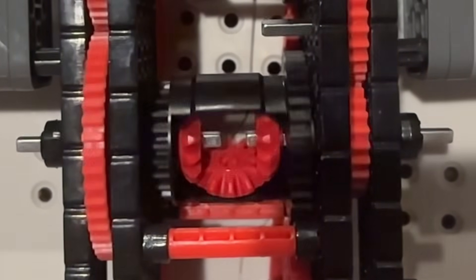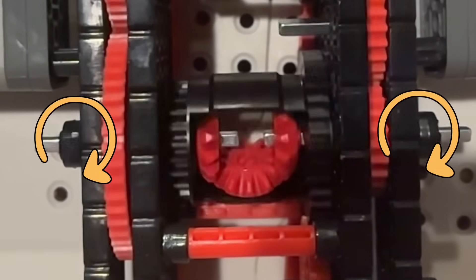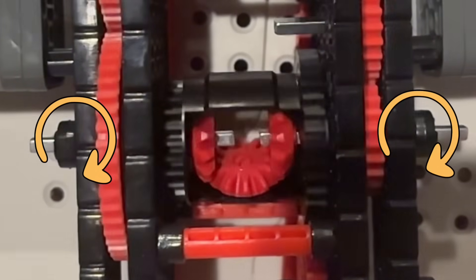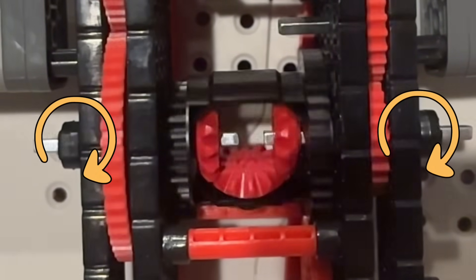However, if both of the gears spin in the same way as you can see on screen right now, the top gear locks. Because both sides are fighting to turn the gear in the middle in opposite directions, the fighting forces the larger differential structure to turn.